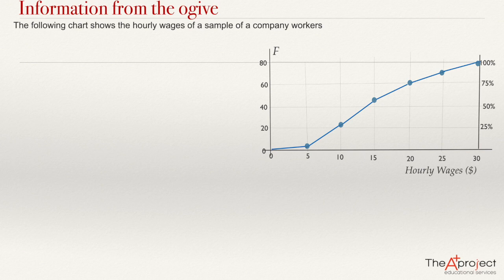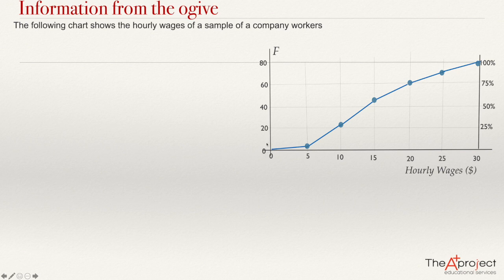This ogive shows the hourly wages of a sample of company workers. The hourly wages appear on the x-axis. The cumulative frequency appears on the y-axis. We need to remember that every point in the ogive represents the relation between the value of the variable and the cumulative frequency.